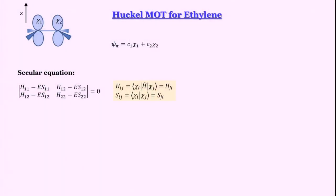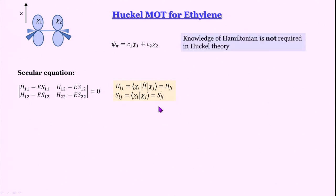Remember that h_ij where i and j can be 1 and 2 — this is equal to h_ji. And s_ij is equal to s_ji. Also, an interesting aspect of Huckel MOT is that we do not have to write the Hamiltonian; we try to formulate without doing it explicitly.